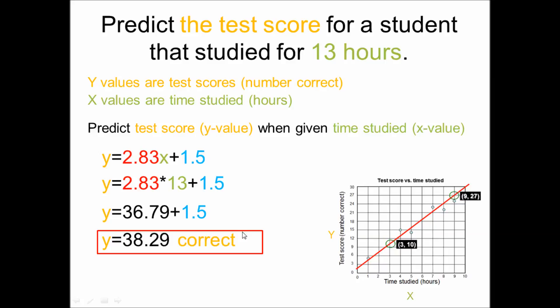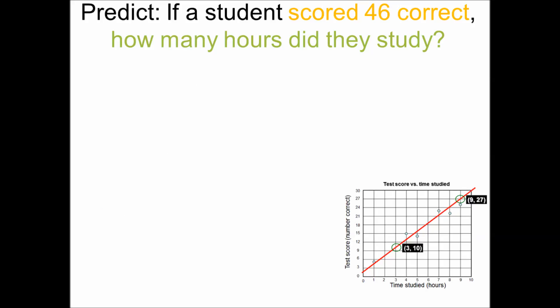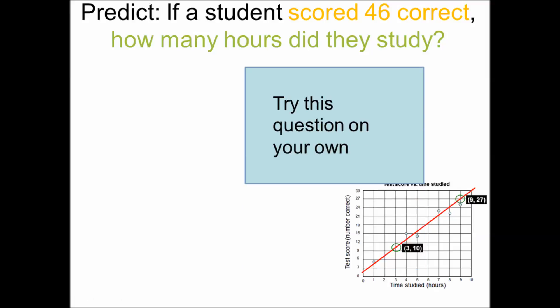And that is your final answer. Now we can use this equation a different way. Let's say I know that I want to score 46 correct questions — granted there was only a 40-question test, but we want to be really good. If a student wanted to score 46 correct, how many hours would they have to study? Please pause the video and try this question on your own, and I will show you the answer in a few seconds.